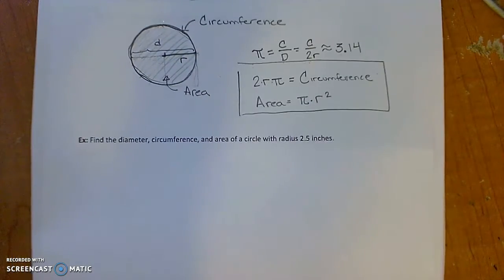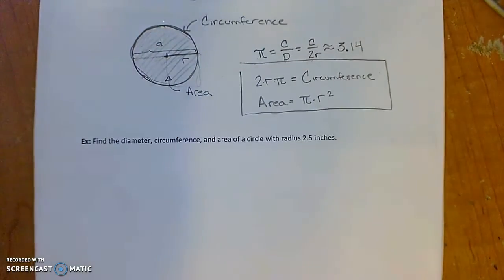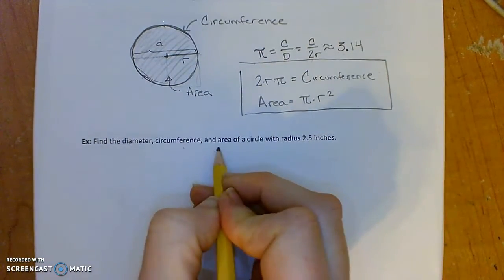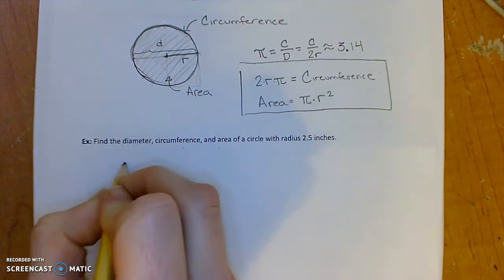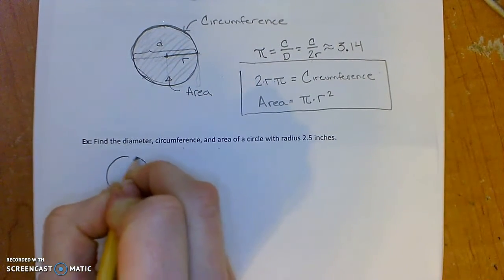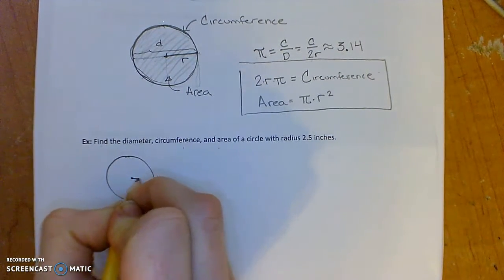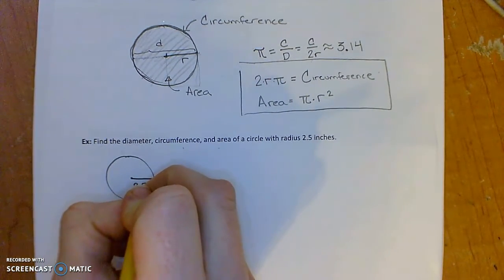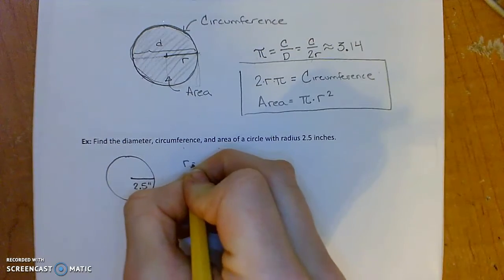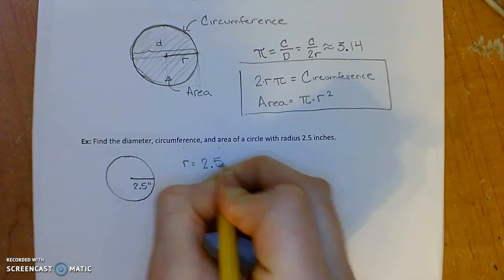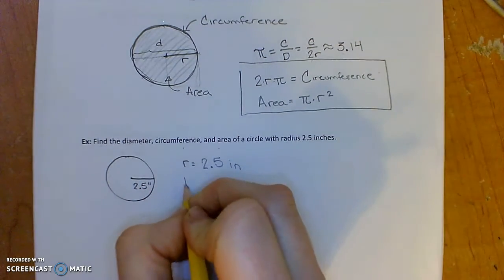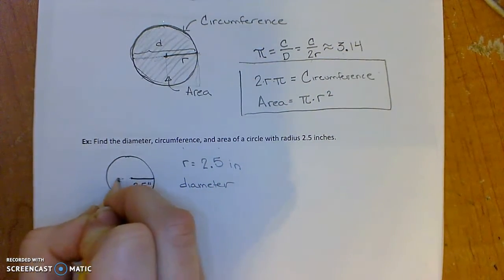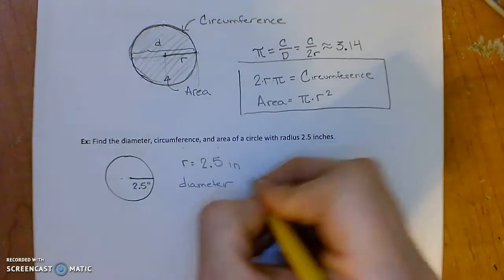Let's just do one example where we calculate circumference and area, and we need to make sure that we understand the units as well. So let's find the diameter, circumference, and area of a circle that has radius 2.5 inches. So here's my circle, my radius here is 2.5 inches, so r equals 2.5 inches.